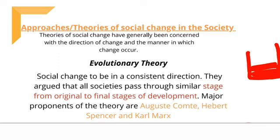Evolutionary theory kya batati hai? Evolutionary theory concerns the direction and manner of social change — jis tarike se change hota hai. Evolutionary theory ke according, social change tends to be in a consistent direction. Koi bhi society yeh claim nahi kar sakti ki woh static hai — har society mein time to time change aata hai.